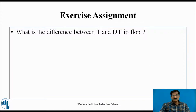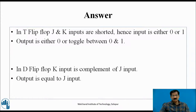What is the difference between T and D flip-flop? In the T flip-flop, J and K inputs are shorted, so the input is either 0 or 1, and the output is either 0 or it toggles between 0 and 1. In the D flip-flop, the K input is the complement of the J input, and the output equals the J input — if J equals 0, output is 0; if J equals 1, output is 1.